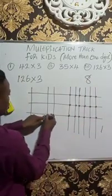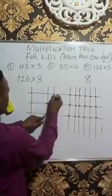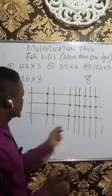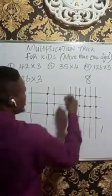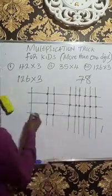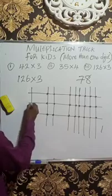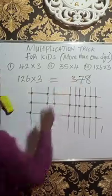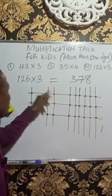Coming here, you have 1, 2, 3, 4, 5, 6. Plus the 1 we carried. The 6 we got here plus the 1 we carried will give us 7. Then let's see here: 1, 2, and 3. So you write 3. Therefore, 126 multiplying 3 will give us 378.